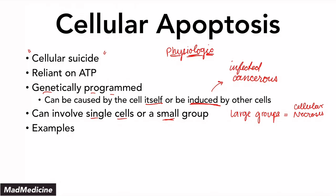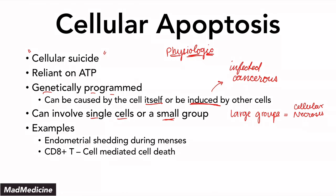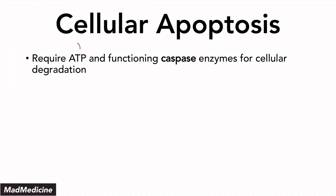Apoptosis is either at a single scale or a small group. Examples of physiologic apoptosis — normal apoptosis events — can be seen throughout our body. For example, you can see it happening in the endometrium: the endometrial lining sheds during menses. CD8 cytotoxic T cells mediate cell death in cells that are either infected or precancerous. Embryogenesis also involves apoptosis at many steps. Apoptosis requires ATP, but it also requires functioning caspase enzymes for degradation of the cell itself.